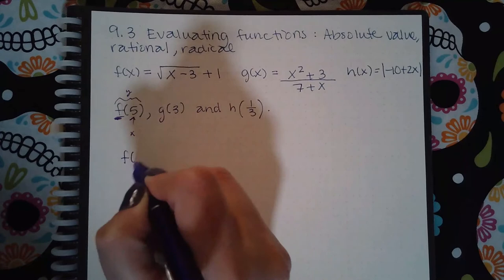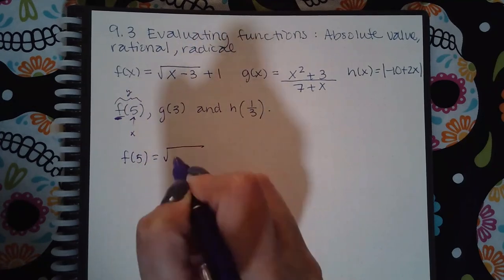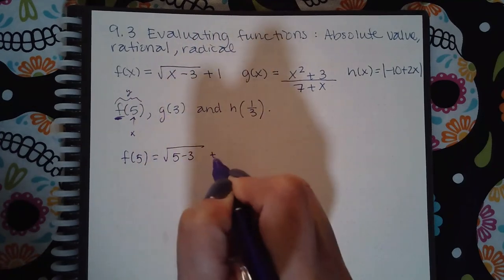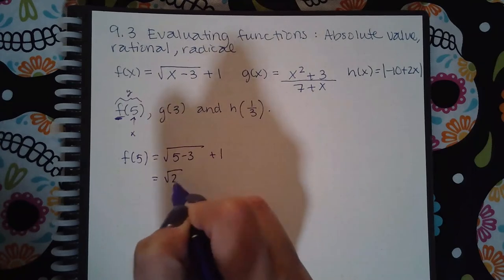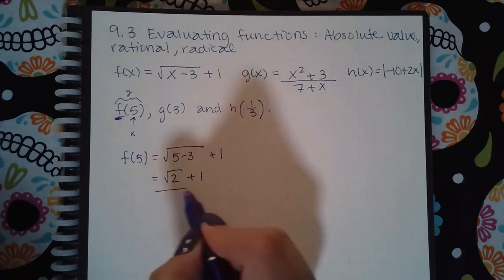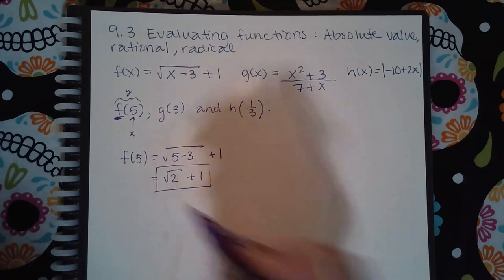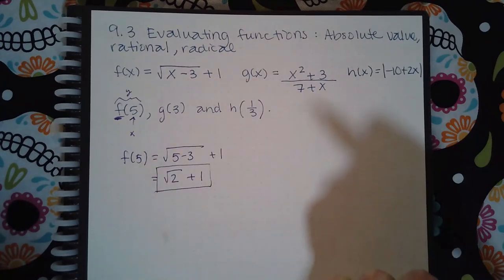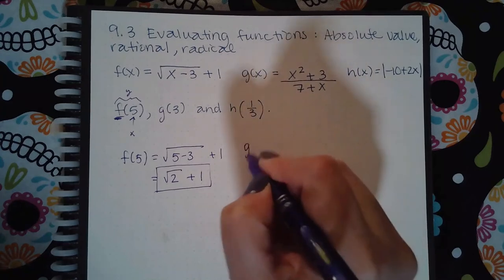f of 5 is going to be the square root of 5 minus 3 plus 1, which is the square root of 2 plus 1. You cannot simplify the square root of 2, so this is just going to stay exactly like that. That is the answer for f of 5.